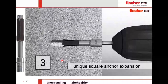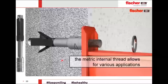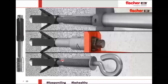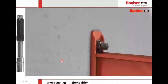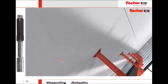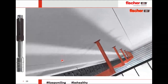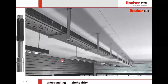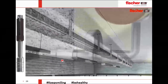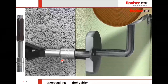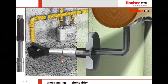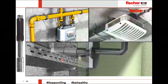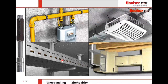Once expanded, you can attach the threaded rod and complete your application. Different head types are available — ring, countersunk, etc. The FPX-I can also be used for handrails or fixings in plasterboard with aerated block backing.